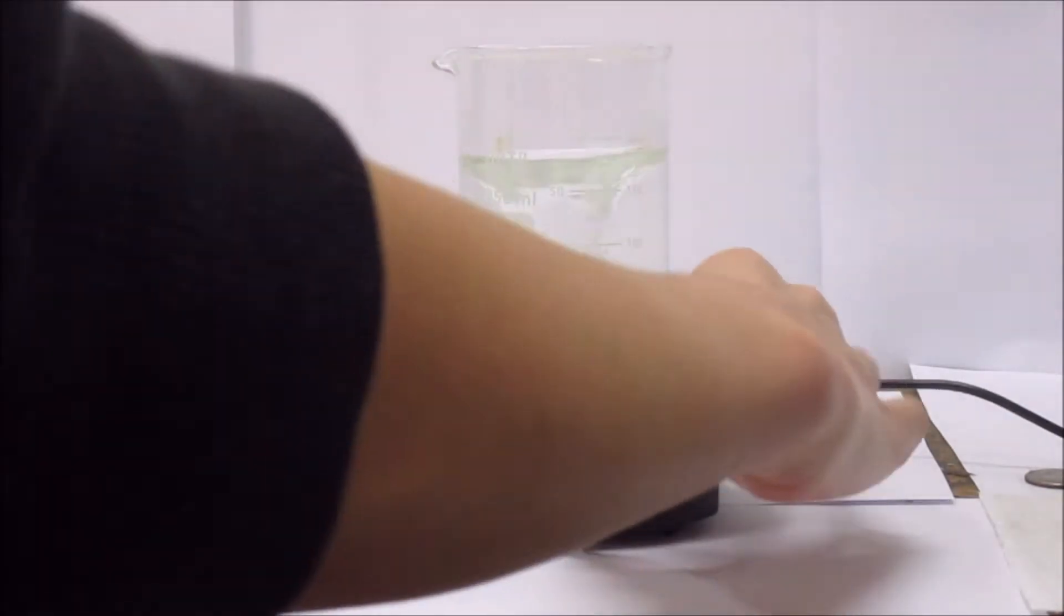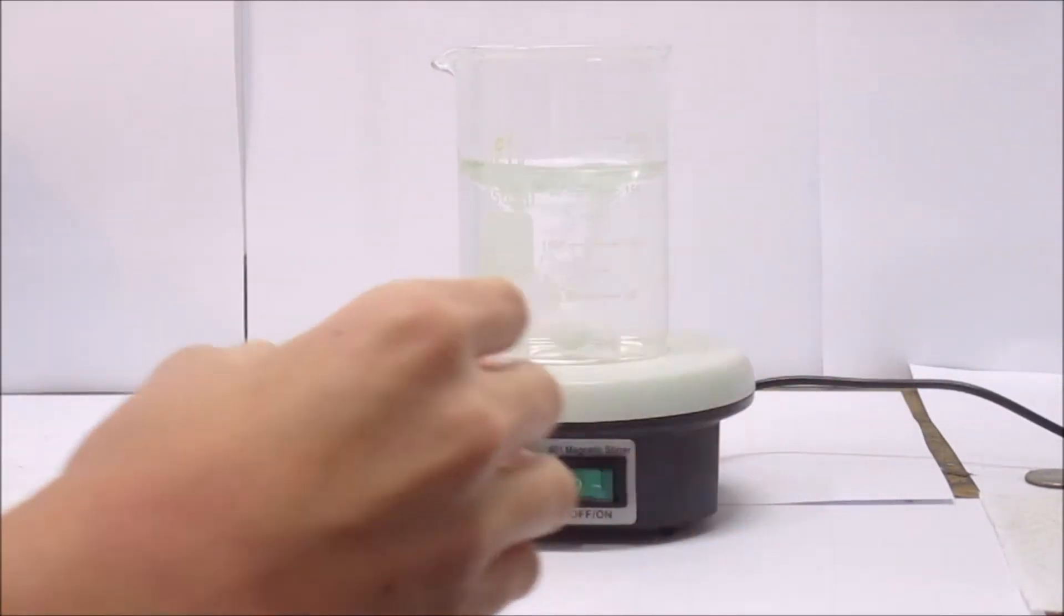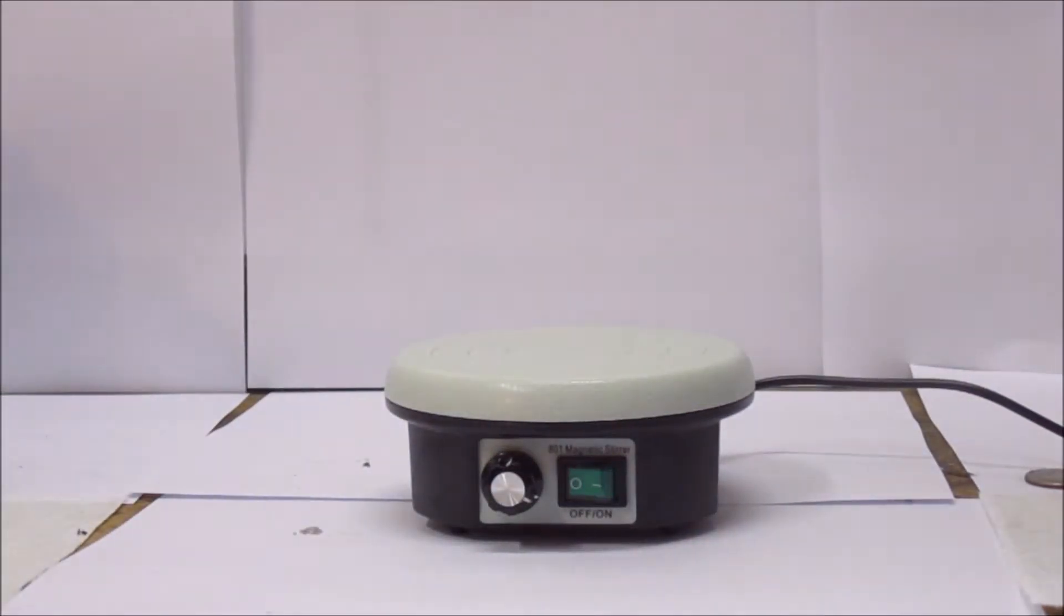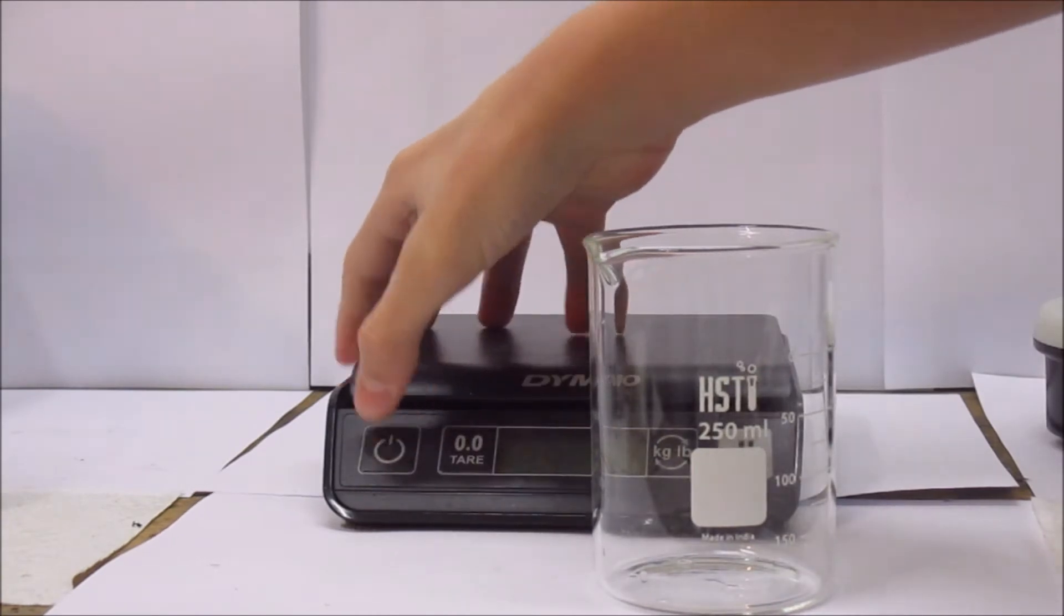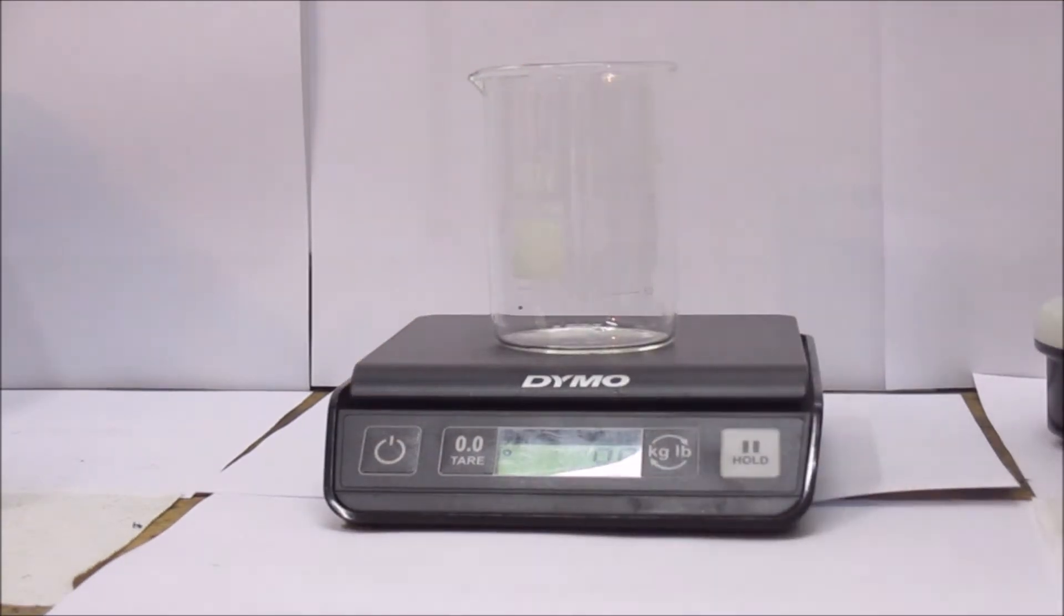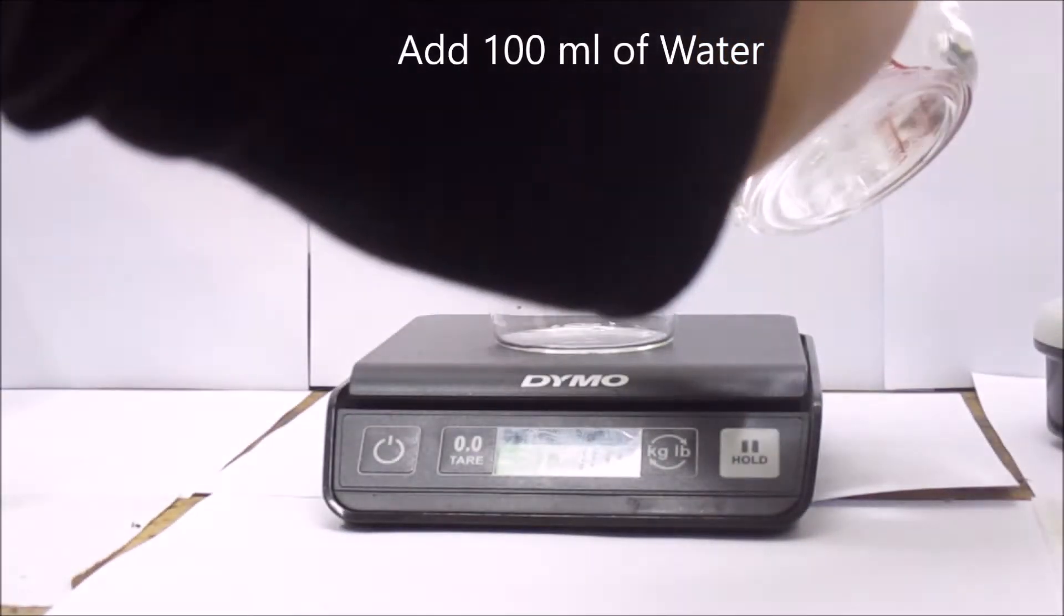When it was fully dissolved, I turned off the stirring and took it off the stir plate. Then I got a new beaker, placed it on the scale, and added 100 ml of water.